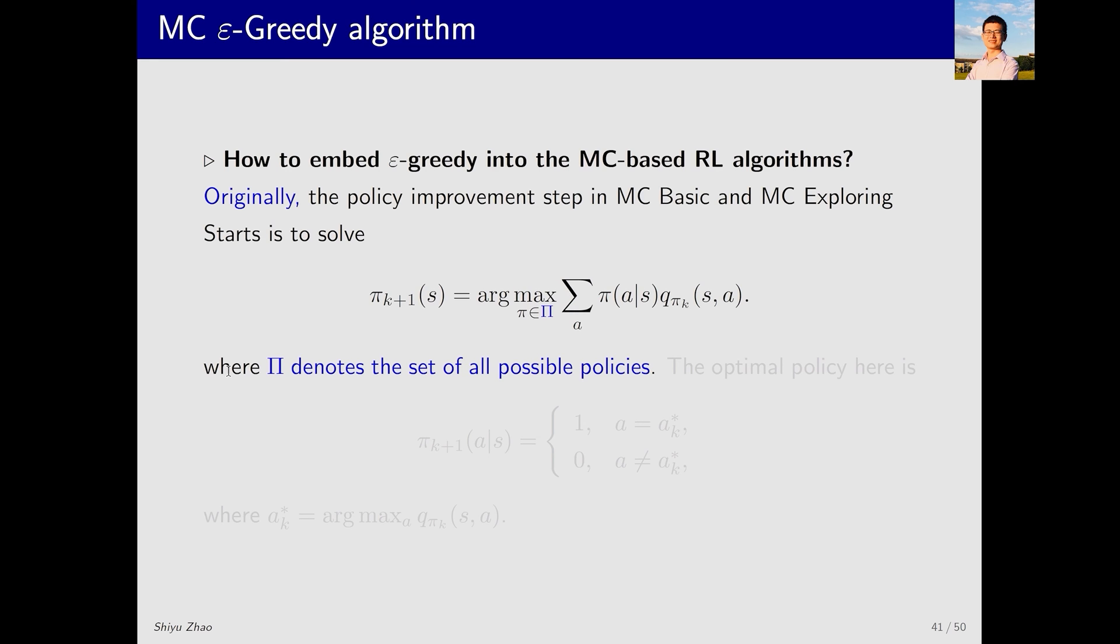Let's revisit the policy improvement step in our previous algorithms, MC Basic and MC Exploring Starts. In this step, we initially compute q_{π_k} and then solve an optimization problem to obtain a new policy.